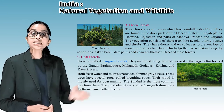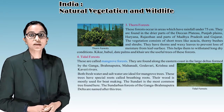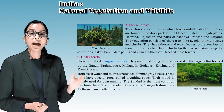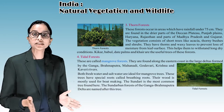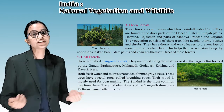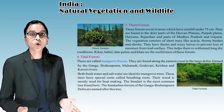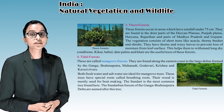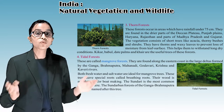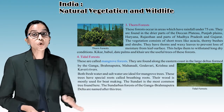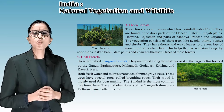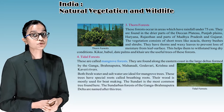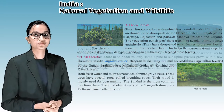The fourth is tidal forests, also called mangrove forests. They are found along the eastern coast in the large deltas formed by the Ganga, Brahmaputra, Mahanadi, Godavari, Krishna, and Kaveri rivers. Both fresh water and salt water are ideal for mangrove trees. These trees have special roots called breathing roots, and their wood is mostly used for boat making. The Sundari is the most common tree found here, and the Sundarbans forest is named after this tree.